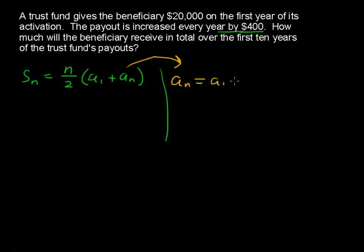equals the first term, a sub 1, plus n minus 1. So how many increases or decreases do you have? We're going to have 10 minus 1, in our case, times d, and that's the difference between each term. And again, this one is a positive difference because we're adding. We're adding 400 every time.